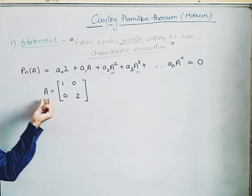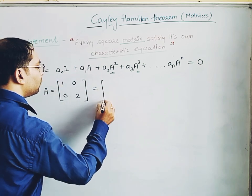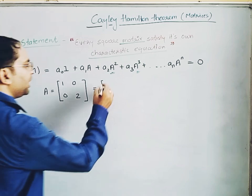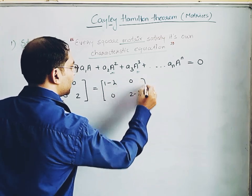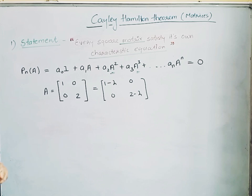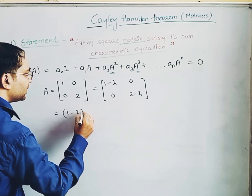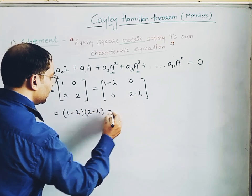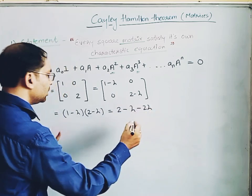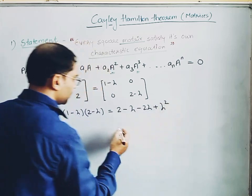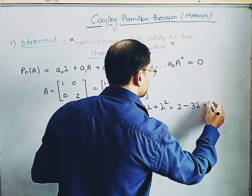Let us understand the Cayley-Hamilton theorem in detail. Consider a matrix A; we need to find its characteristic equation. The characteristic matrix would be (1 − λ), 0, 0, (2 − λ), and we expand this to get the characteristic equation. The expansion gives (1 − λ)(2 − λ) = 2 − λ − 2λ + λ², which simplifies to λ² − 3λ + 2.